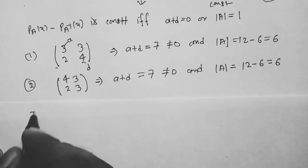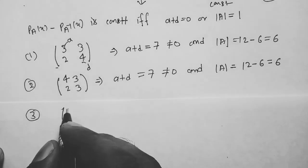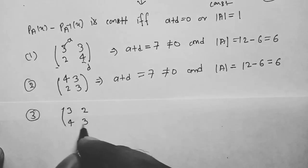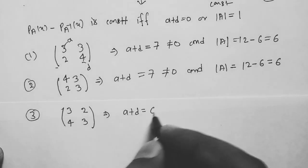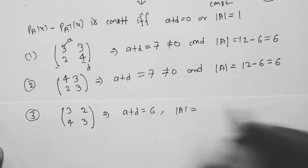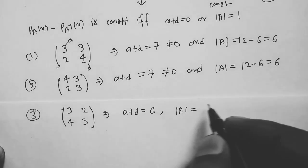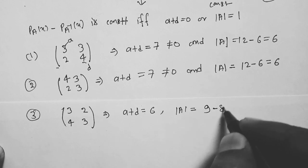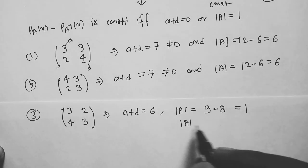For the third option, matrix [[3,2],[4,3]]: A plus D equals 3 plus 3 equals 6, and determinant equals 9 minus 8 equals 1. So determinant equals 1, meaning this option satisfies the condition.